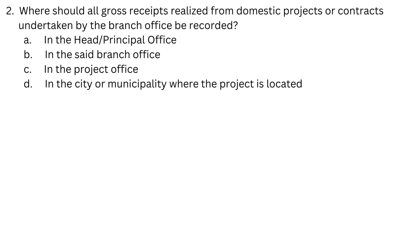Question 2: Where should all gross receipts realized from domestic projects or contracts undertaken by the branch office be recorded? A. In the head or principal office. B. In the said branch office. C. In the project office. D. In the city or municipality where the project is located.